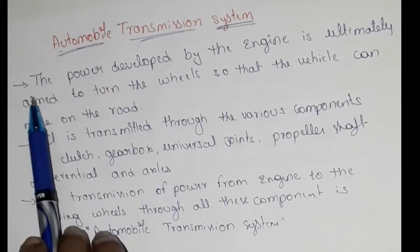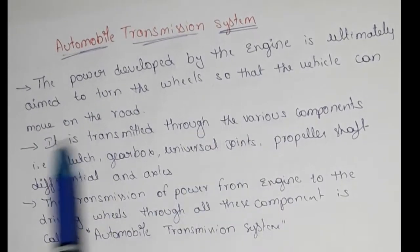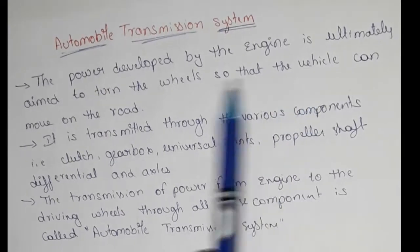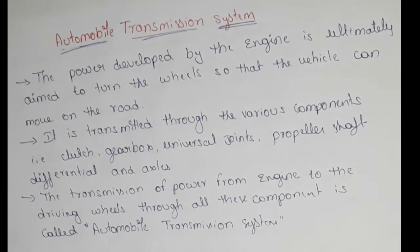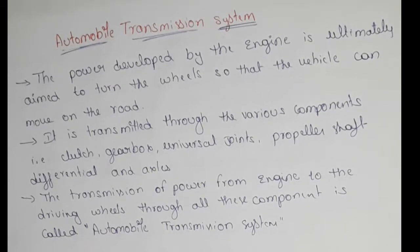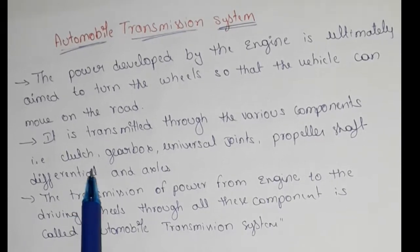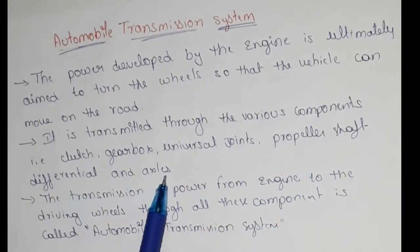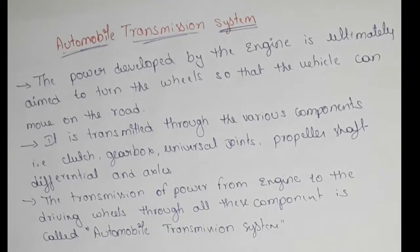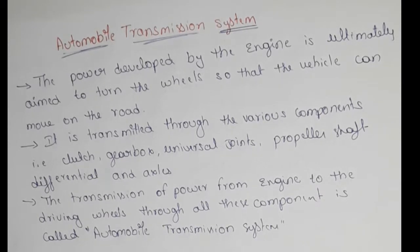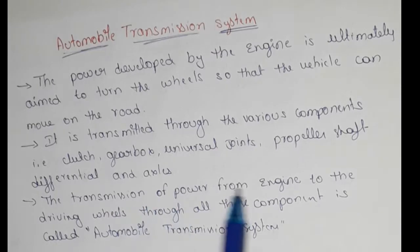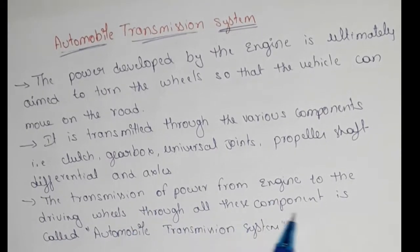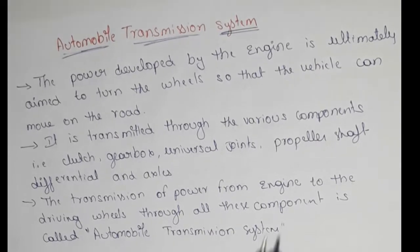First, the power developed by the engine is ultimately aimed to turn the wheels so that the vehicle can move on the road. It is transmitted through various components: clutch, gearbox, universal joints and propeller shaft, differentials and axles. The transmission of power from the engine to the driving wheel through all these components is called the Automobile Transmission System.